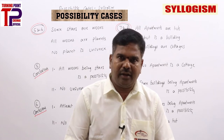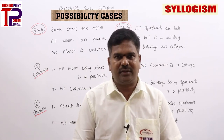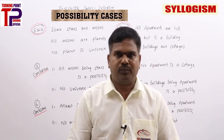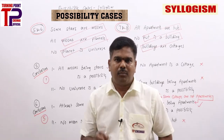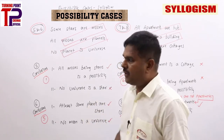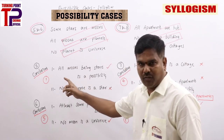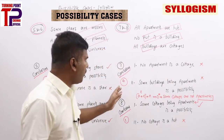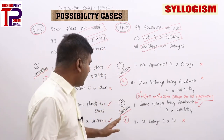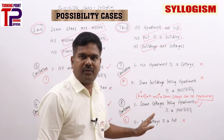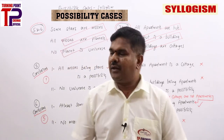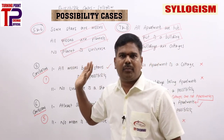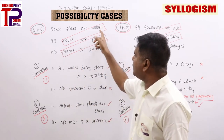Let's discuss questions 5 and 6. The statements are already properly aligned — predicate of first matches subject of second, predicate of second matches subject of third. Question 5, conclusion 1: 'all moons being stars is a possibility' — moons and stars appear in the first statement (I statement). For I, possibilities are A-straight, A-reverse, O-straight, O-reverse. A-reverse (all moons being stars) is a possibility — tick mark.